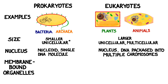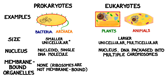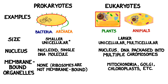The most distinctive feature that separates prokaryotes and eukaryotes is the presence of membrane-bound organelles. Prokaryotes do not have any membrane-bound organelles. They do have ribosomes, but because ribosomes are not membrane-bound, they don't count. Eukaryotes have many types of membrane-bound organelles. A few examples include mitochondria, Golgi bodies, and chloroplasts.